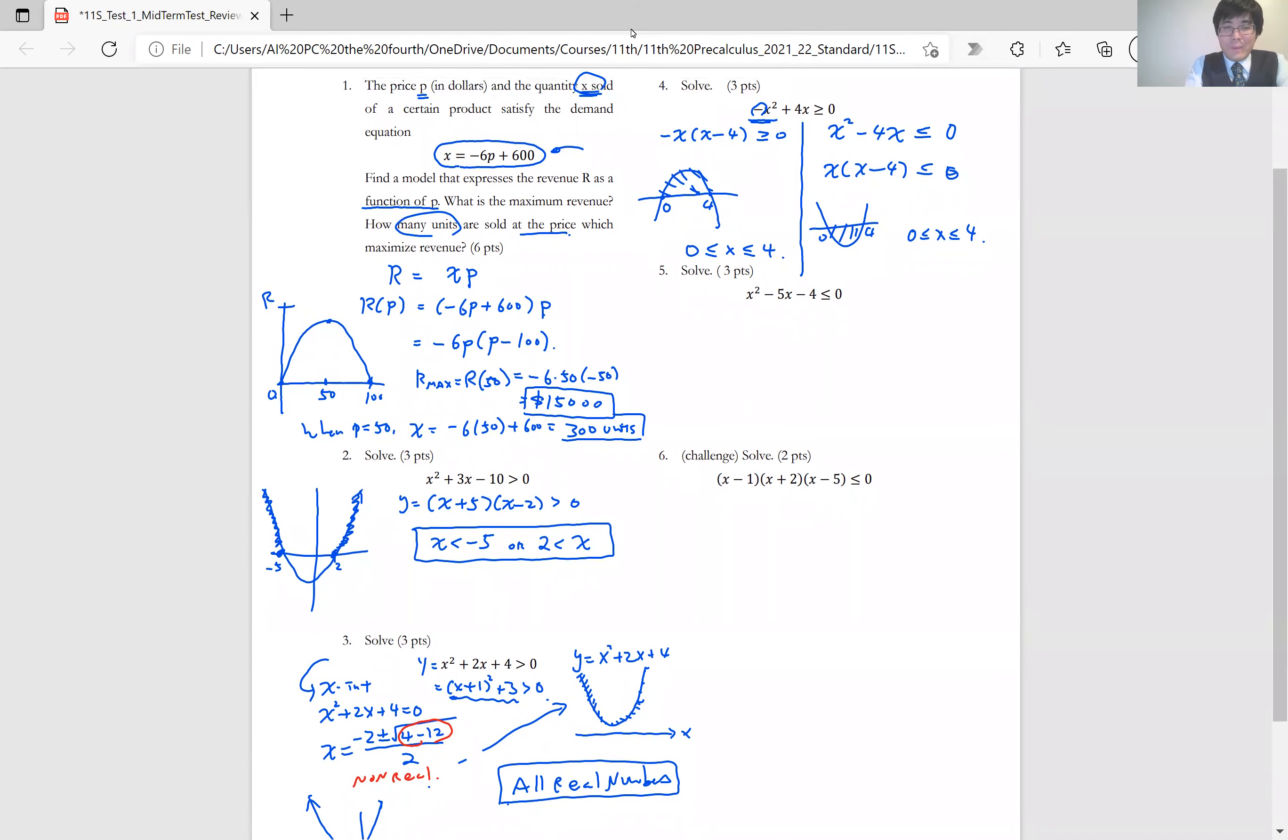Number 5. Well, you cannot factor it by integers. So again, let's use quadratic formula to find x-intercept. So you set that equal to 0 and you solve for x. So it's going to be negative b plus minus square root of 41. So this is a real number. This is a real number. So we actually have two x-intercepts. So the bigger one is plus square root of 41. And the smaller one is minus square root of 41.